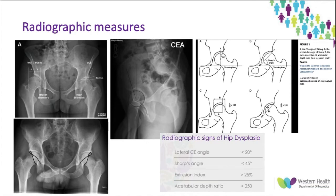In order to make good radiographic measurements you need good x-rays, so the standard series to order includes a standing AP, a false profile lateral, and a Dunn 45-degree view to assess for CAM lesions. The key radiographic signs of hip dysplasia are the lateral center edge angle, Sharp's angle, the extrusion index, and the acetabular depth ratio. These are demonstrated on the slide.